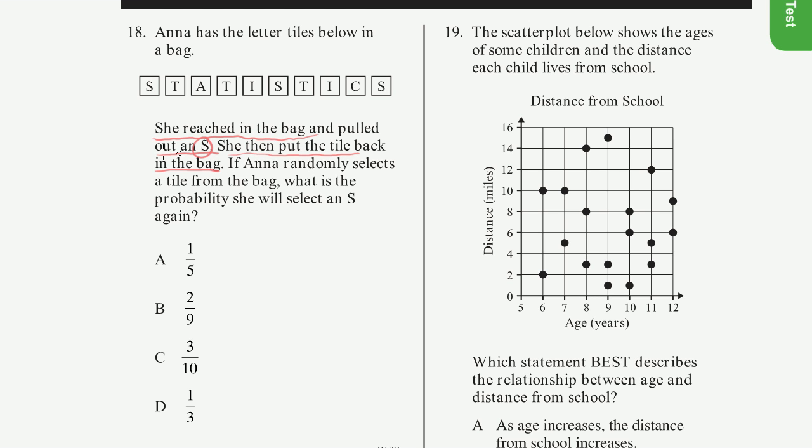Then it says, if Anna randomly selects a tile from the bag, what is the probability she selects an S? So all we have to say is, all of these are in the bag. So what are the possible outcomes? So there's 1, 2, 3, 4, 5, 6, 7, 8, 9, 10 possible outcomes.